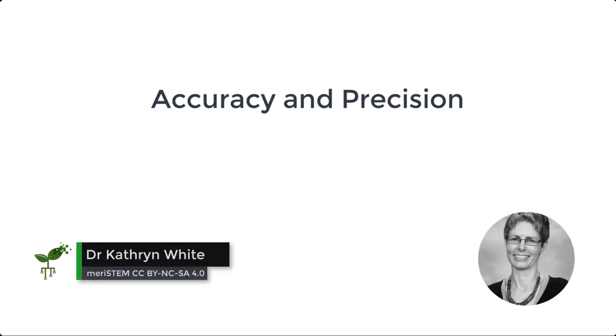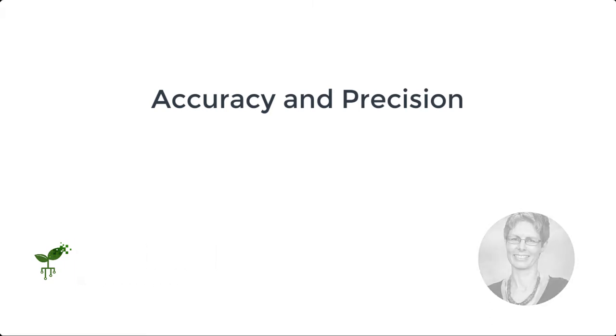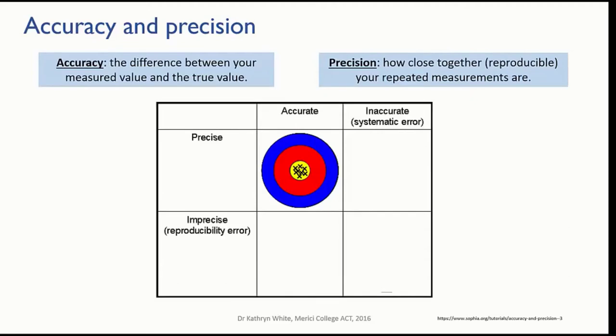In this video, we'll look at the concepts of accuracy and precision. We've looked at sources of error in measurements - random error and systematic error. Now, each of these has an effect on your final measurement, on its precision and its accuracy.